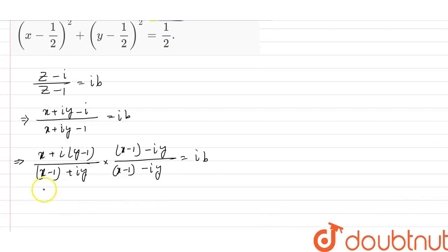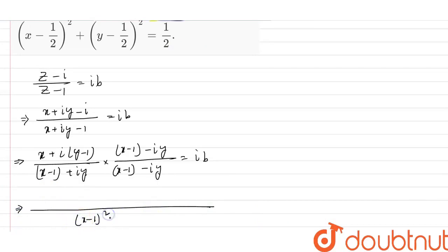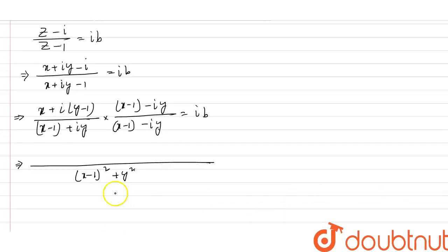So the real part uses the a plus b into a minus b formula, giving a square minus b square. So a square minus b square means i square y square; and since i square equals minus 1, we get minus 1 times y square. So x minus 1 squared gives x square. And x minus x is x.